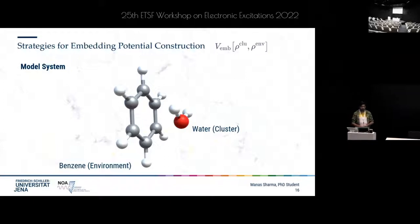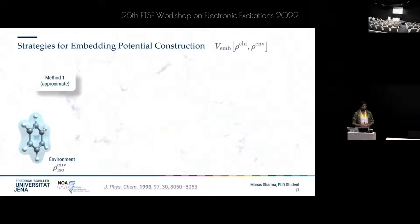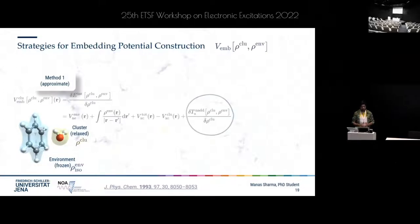I will consider the benzene molecule as the environment and the water molecule as the cluster or region of interest. In Method 1, we relax the isolated environment density, plug it into the embedding potential formula, and then relax the cluster density in the presence of this embedding potential. This method is approximate because the embedding potential contains a non-additive kinetic energy potential term, and one has to resort to approximate kinetic energy density functionals to calculate it — just like exchange-correlation functionals, we do not know its exact form.